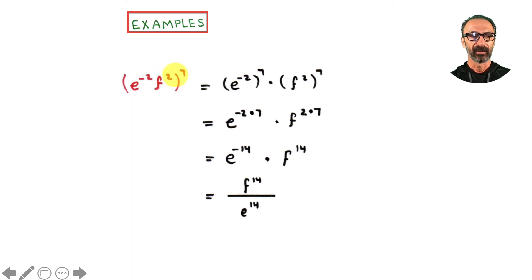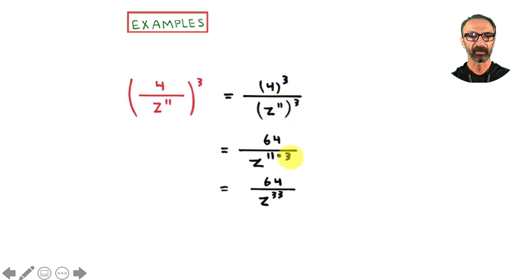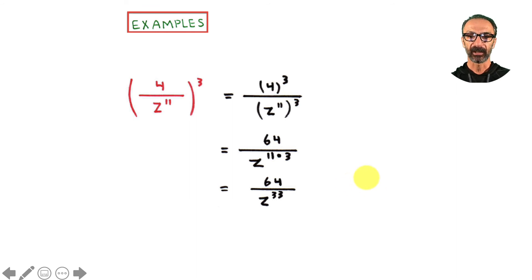Another example: apply the seven to both factors. Multiply the exponents — one factor has a negative: negative two times seven means bring it down to make it positive. And we're done. One more: apply the three to the top, apply the three to the bottom. Here there's a power of a power — multiply three times eleven equals 33. Four to the third is 64 (four times four times four). So the final answer is 64 over z to the thirty-third.